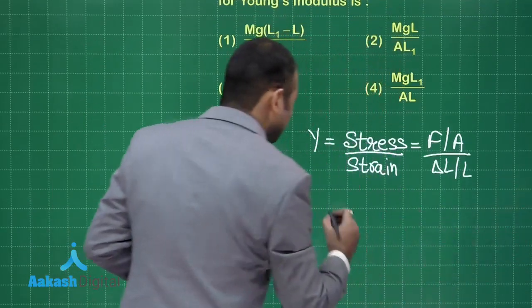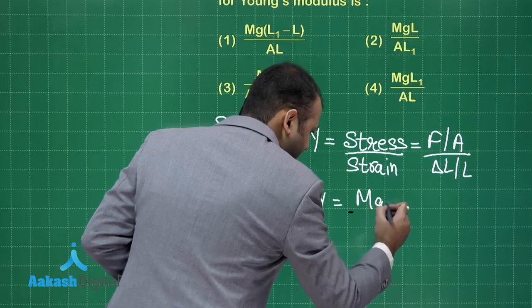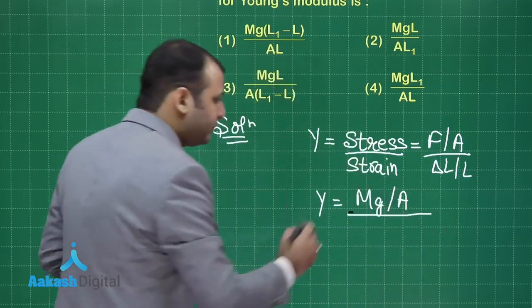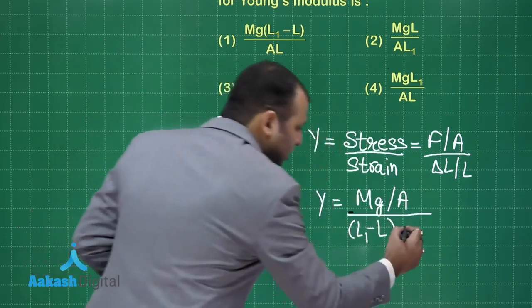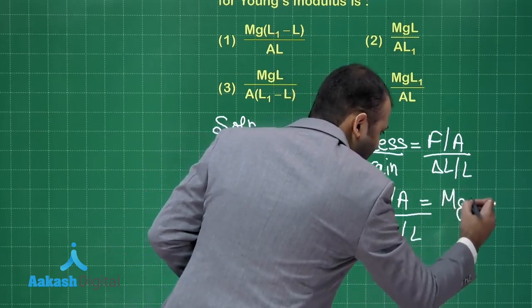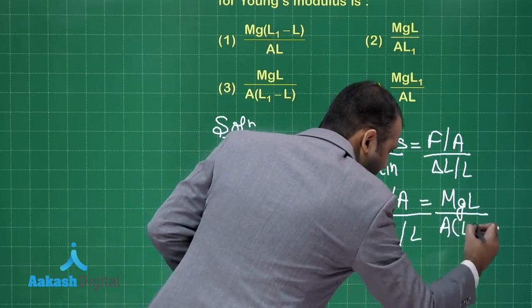Now from here, when you just put the values, Y would be the force is due to the mass, that is Mg divided by the area of cross section of the wire which is hanging. Delta L will be L1 minus L. L1 is the new length, L is the original length divided by L. Solving this, you will get MgL divided by A L1 minus L.